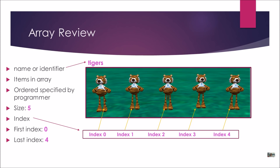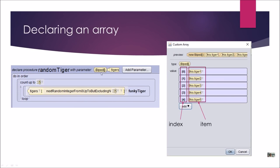Let's quickly review arrays. When we started this chapter, we learned various different ways to do count loops, then we did arrays. An array is a container that holds lots of the same objects — it has an index that keeps track of the position of each object. To declare an array, you use a parameter inside your procedure, the array parameter, and the name is always plural. When you call the procedure, you put the objects into the array.